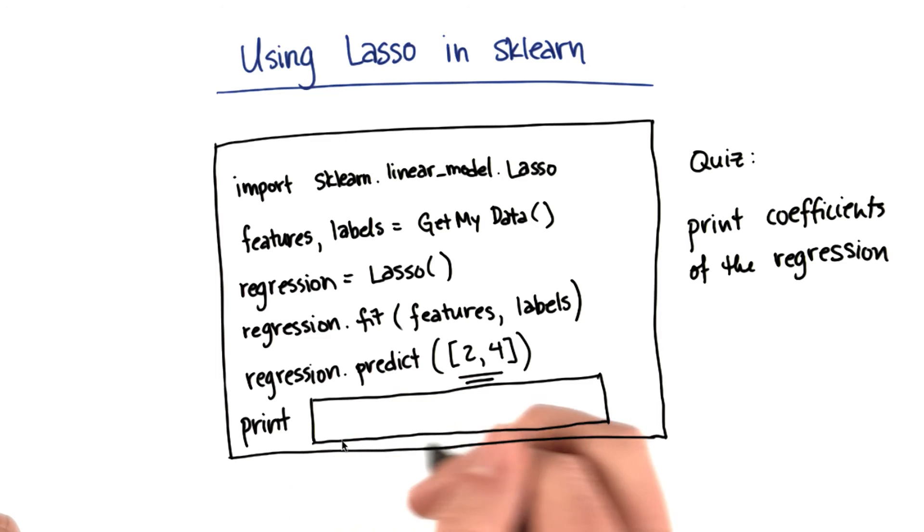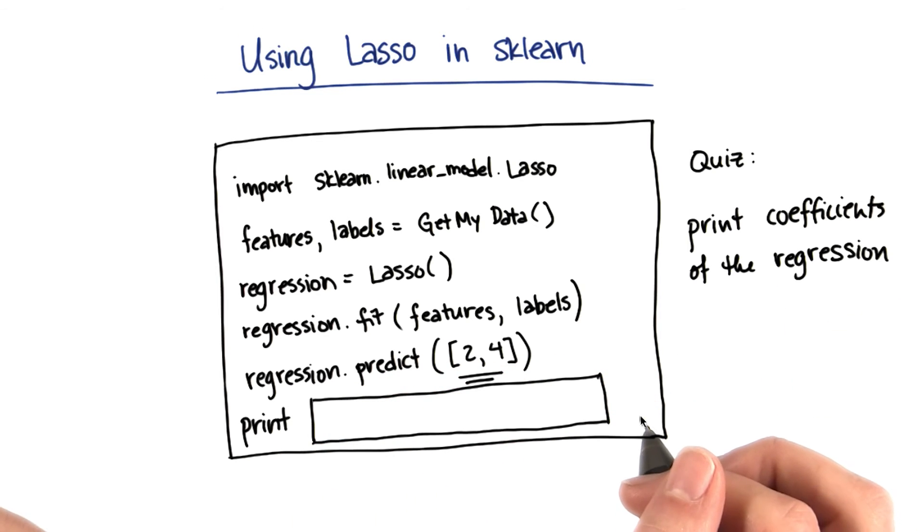So the question for you is what would you put in this box here to print the coefficients of the regression? So I've already given you the print command, and the question is what line would you put in this box to access the coefficients?